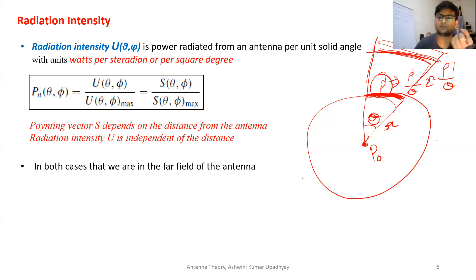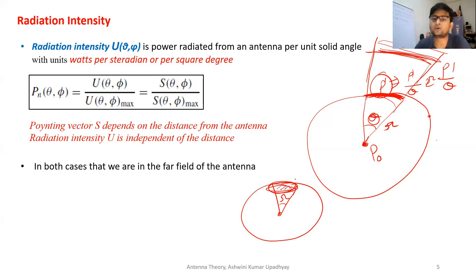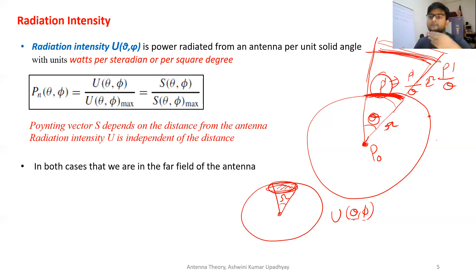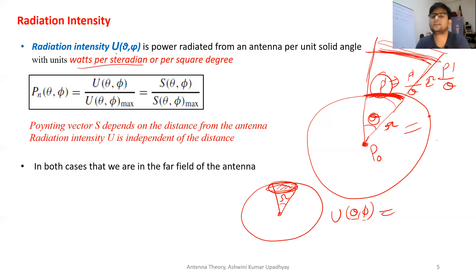Similarly, in 3D, the two-dimensional angle is converted into a three-dimensional steradian, or solid angle. So radiation intensity U(θ,φ) is the total power radiated per unit solid angle in a particular direction by the antenna. This quantity is not dependent on distance from the antenna. The unit is watts per steradian.